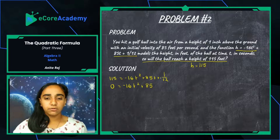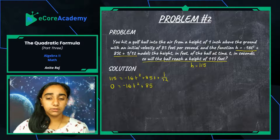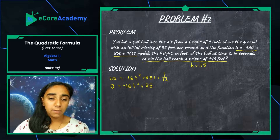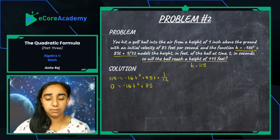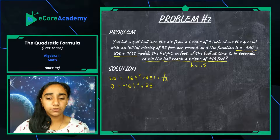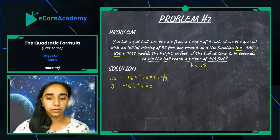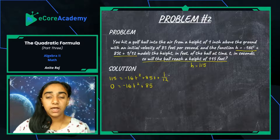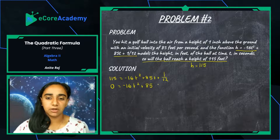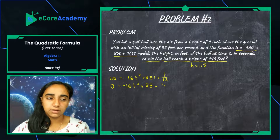We need to convert 115 so it has the same denominator as 1/12. Right now it's 115 over 1, so to get a denominator of 12 we multiply numerator and denominator by 12, giving us 1380 over 12. Because we're subtracting it from 1/12, we have 1/12 minus 1380/12. One minus 1380 equals negative 1379, so this gives us negative 1379 over 12.